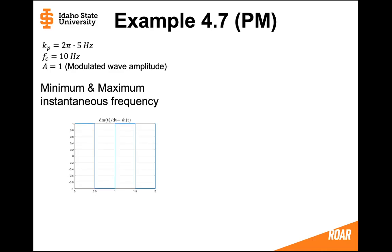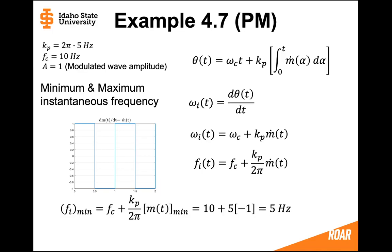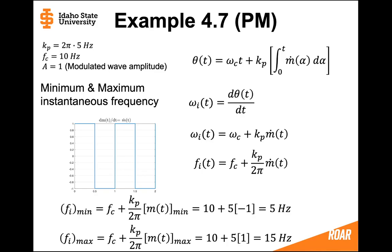To find the minimum and maximum instantaneous frequency, this time it's actually easy. Normally it's a bit difficult to find the instantaneous frequency for a phase modulated signal because we need the derivative of the message. However, this time we were given the derivative of the message directly. The instantaneous frequency is the derivative of the angle, which equals the carrier frequency plus kp multiplied by the derivative of the message. Dividing by 2π gives frequency in Hertz. Substituting the minimum value of minus 1 and maximum value of plus 1 for the derivative, we get a range from 5 Hz to 15 Hz.